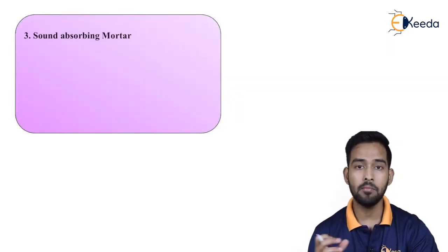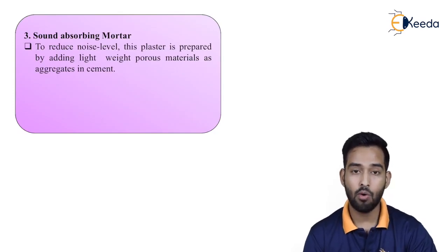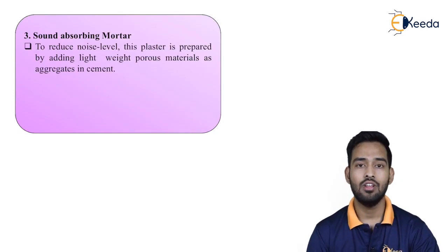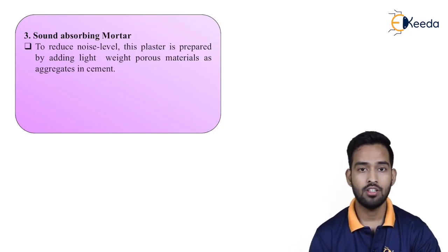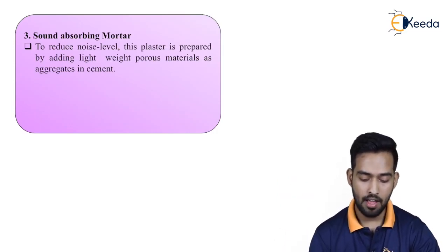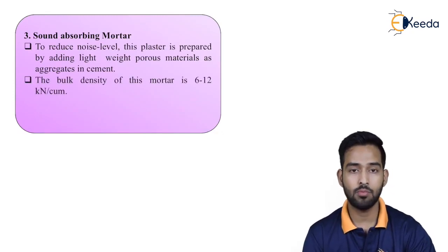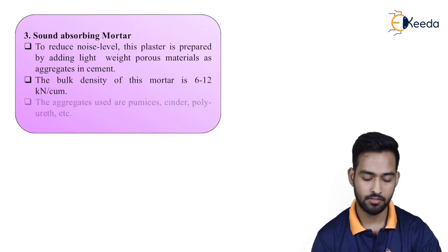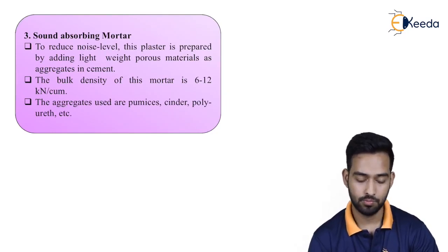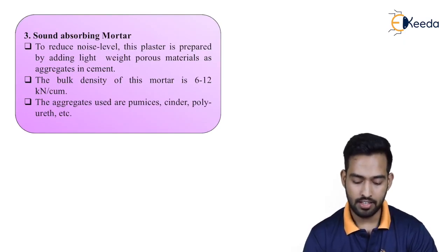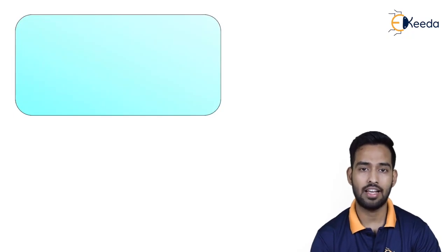Then comes sound absorbing mortar. To reduce noise levels, this plaster is prepared by adding lightweight porous materials as aggregate in cement. We use it for cinema halls or theatres where sound absorbing barriers are needed — the walls are plastered using sound absorbing mortar. The bulk density of this mortar is 6 to 12 kN per meter cube. The aggregates used are pumice, cinder, polyether, etc.